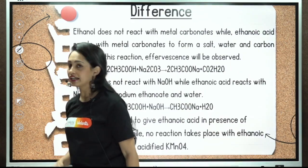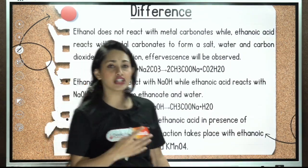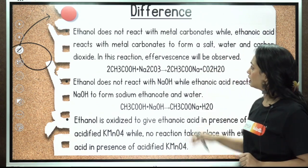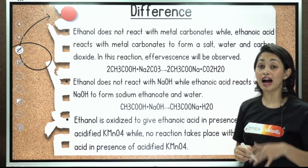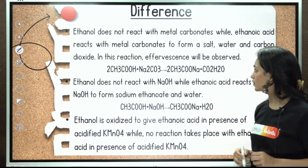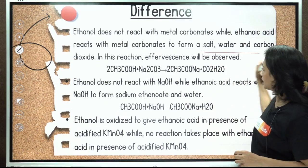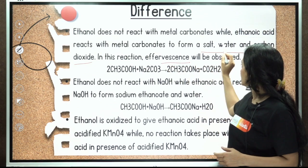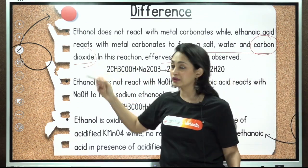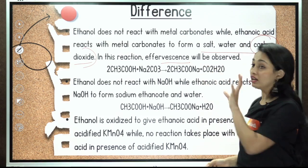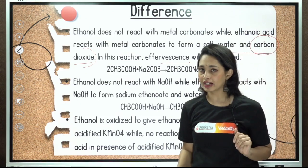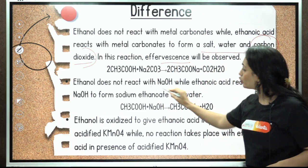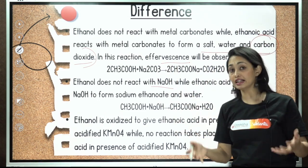What is the difference between ethanol and ethanoic acid? Ethanol does not react with metal carbonates, while ethanoic acid reacts with metal carbonates to give carbon dioxide, salt, and water. In this reaction, effervescence is observed — that effervescence is carbon dioxide. So ethanol does not react with metal carbonates or bicarbonates, but ethanoic acid does.